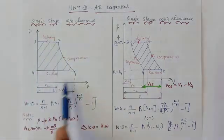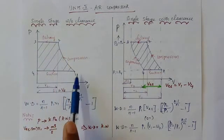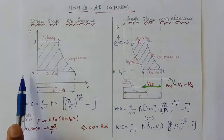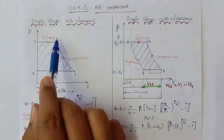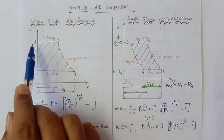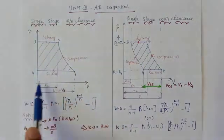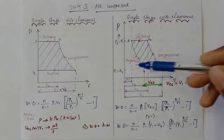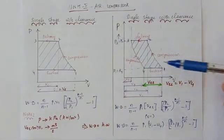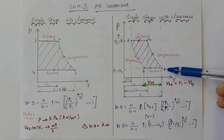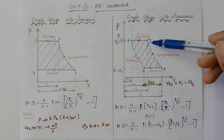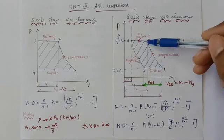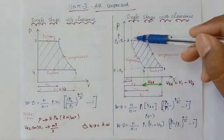This is actually the machine cycle. The piston moves here during suction, then piston moves toward TDC during compression. The remaining one is the delivery. In the case without clearance, the piston first is at TDC, moves during suction, then compression, and the remaining one is delivery.